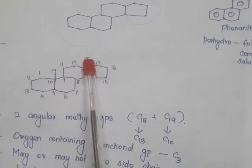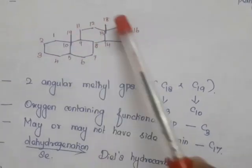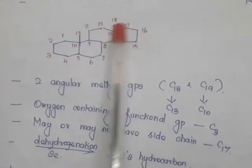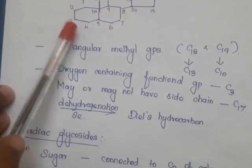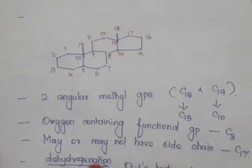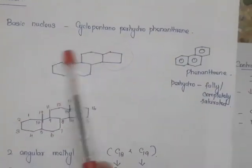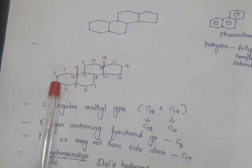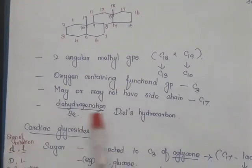The steroid nucleus has two angular methyl groups at C18 and C19. C18 is connected to C13 and C19 is connected to C10. At C3, there is an oxygen-containing functional group. At C17, it may or may not have a side chain. On dehydrogenation using selenium, we obtain Diels hydrocarbon.